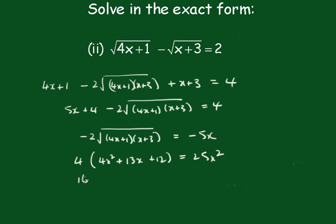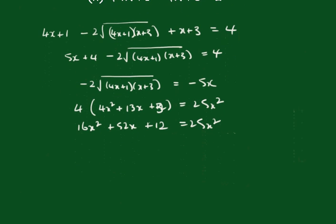I think you'll see where this is going. This gives 16x² plus 52x plus 12 equals 25x². And now this becomes 9x² minus 52x minus 12 equals 0.